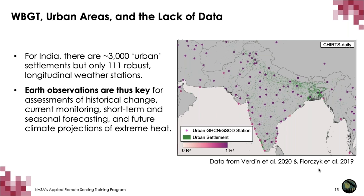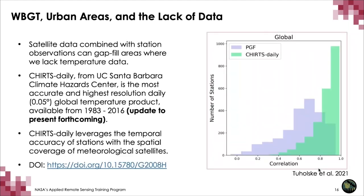This reemphasizes that Earth observations are key for monitoring, assessing historical change, and predicting future extreme heat stress under climate change, as well as short-term and seasonal forecasting. This figure shows pink and purple dots where there are weather stations and green dots as rough estimations of where there are urban settlements across southern Asia — you can see there are far fewer weather stations than urban settlements.